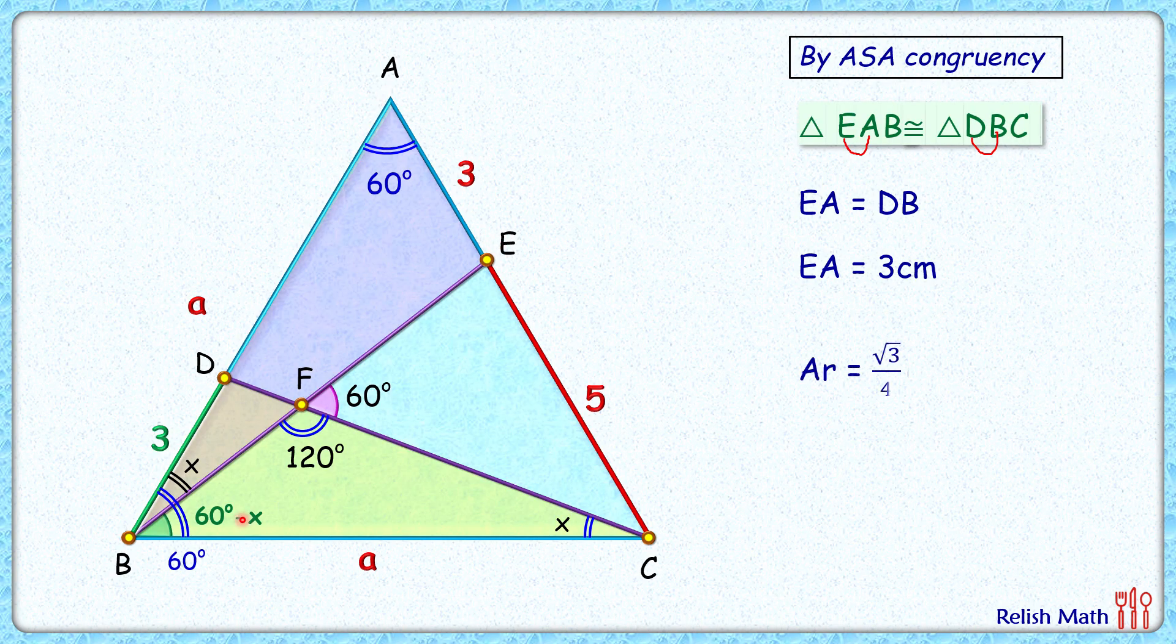The area of this equilateral triangle is √3/4 times a², where a is the side length, which is 8 centimeters. 8 squared is 64.